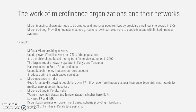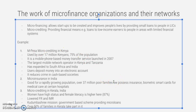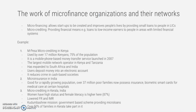M-Pesa uses deposits of money into an electronic account and reduces crime in cash-based societies. Another example is micro insurance in India, which is beneficial for its rapidly growing population. Over 37 million poor families now possess insurance biometric smart cards for medical care at certain hospitals, easing the process of healthcare.